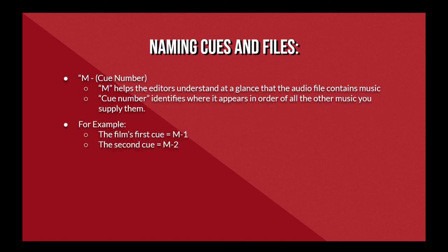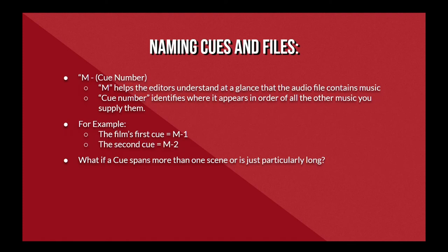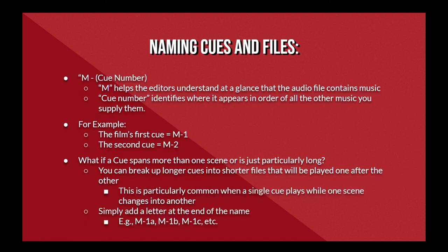For example, let's say that you write a cue for the opening scene of Danny and the Wild Bunch. However, things aren't always that tidy. Let's say that, for whatever reason, you decide to write the first cue using multiple files in your DAW of choice — this is particularly common for especially long cues. For example, let's say that the first cue overlaps from scene 1 into scene 2. You decide that to keep things simple, you'll write the music separately for each scene and just have them play one after the other, as if they were one continuous cue. In this case, you can name each cue as M1A and M1B, letting the editor know that they both belong to the same cue but that it has been broken up into different files.